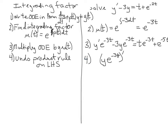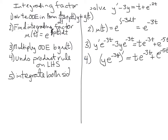Now for step five: integrate both sides. Notice how convenient this is — we have an integral of a derivative on the left, and that's intentional. They undo each other every time, and we end up getting y times e to the negative 3t on the left-hand side. On the right-hand side, we need to integrate.